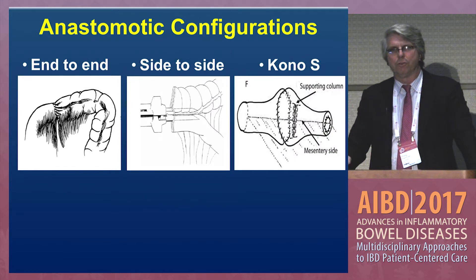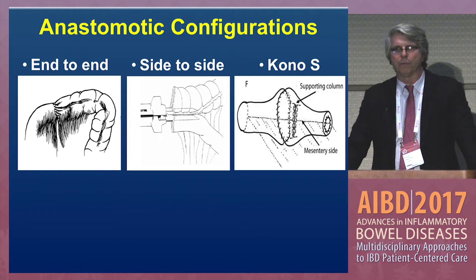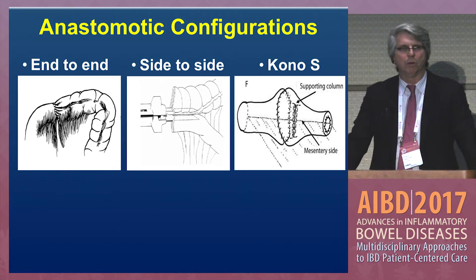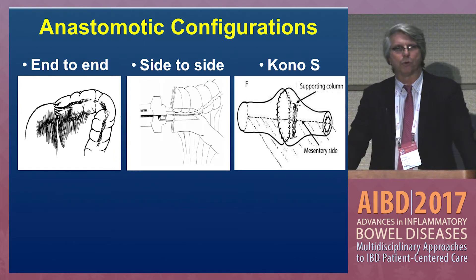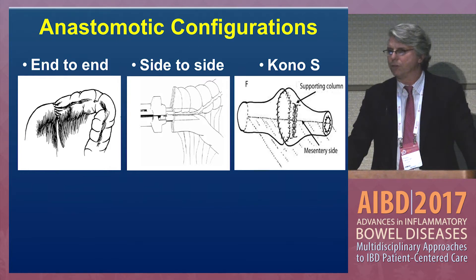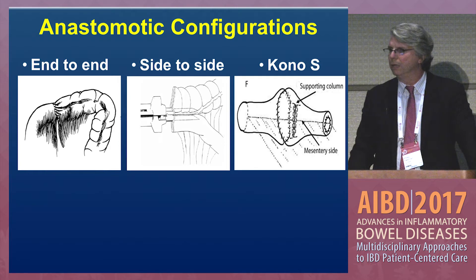Certainly the ones on the left, the first two on the left are the most commonly performed anastomotic configurations in patients who undergo ileocolonic anastomosis — the end-to-end and end-to-side anastomosis. I'll talk a little bit about the Kono anastomosis shortly, but I'm really going to concentrate on the end-to-end and side-to-side configurations, because those are the ones that are most commonly done.